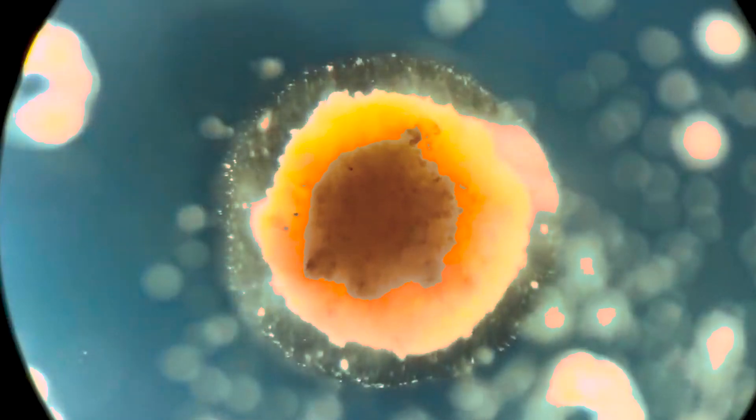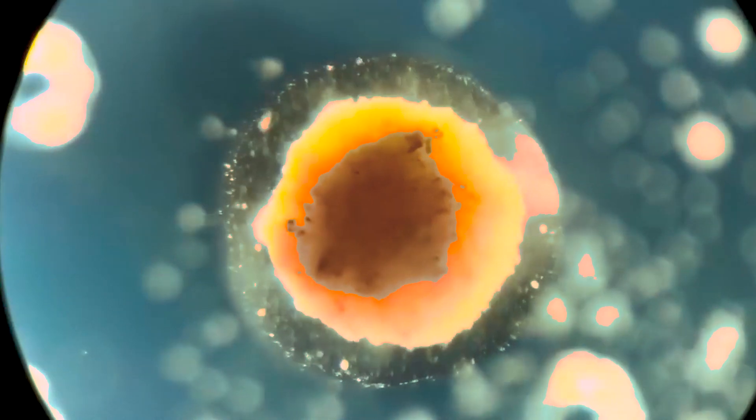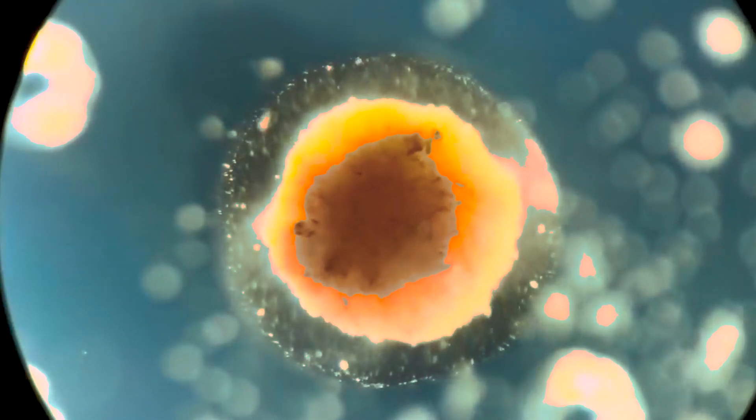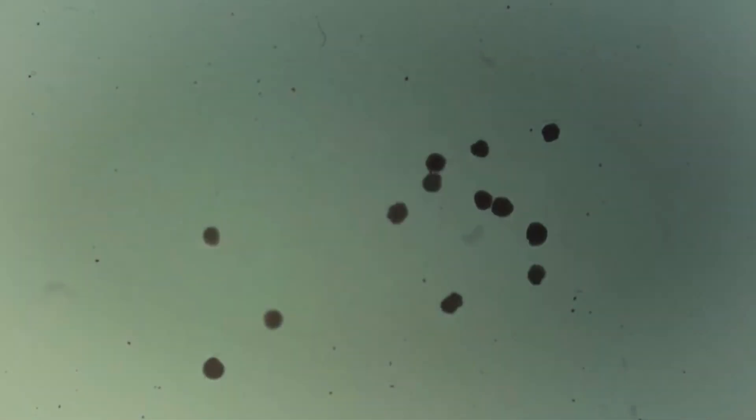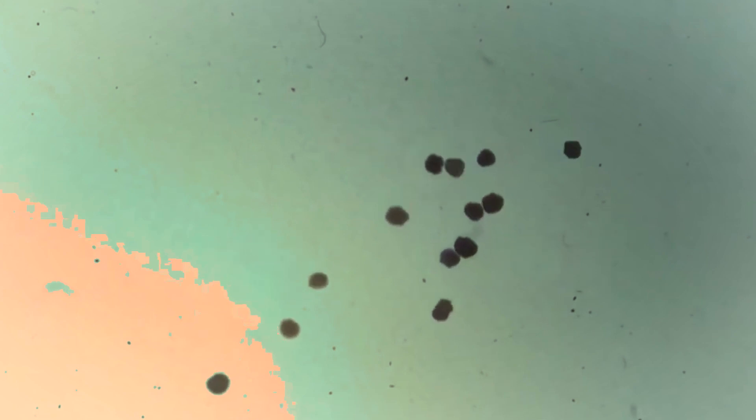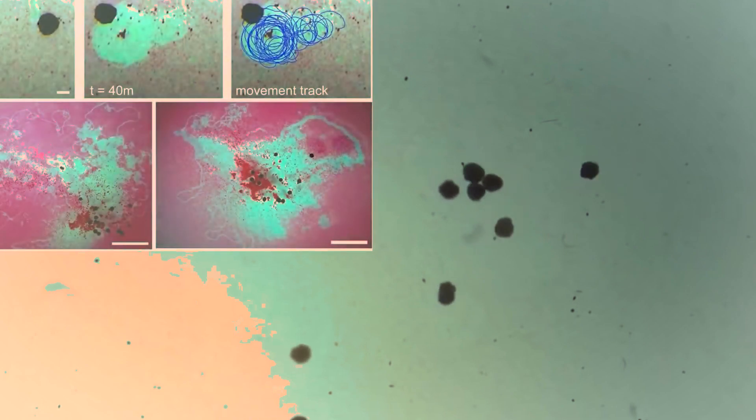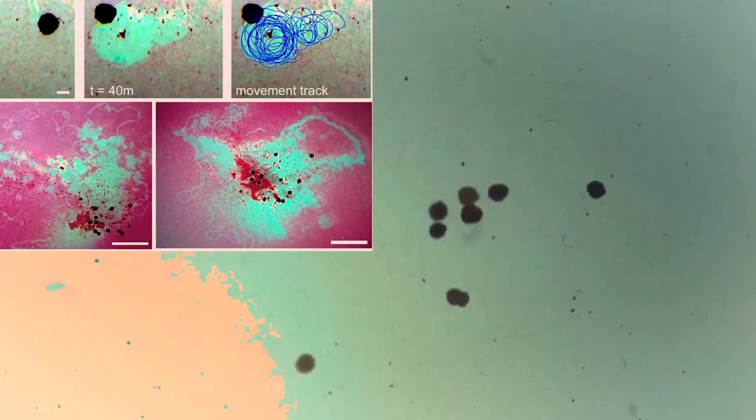The xenobots are less than one millimeter long and made up of 500 to 1,000 living cells. They have a number of basic forms, including those with squat legs. They can drive themselves in linear or circular directions, band together to work together, and move small objects. They will survive up to 10 days using their own cellular capacity.